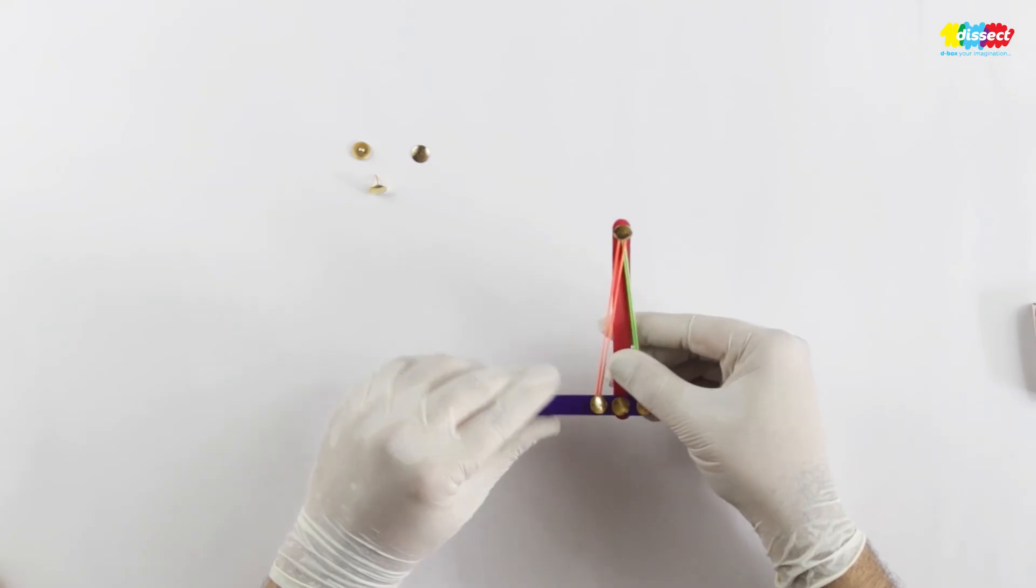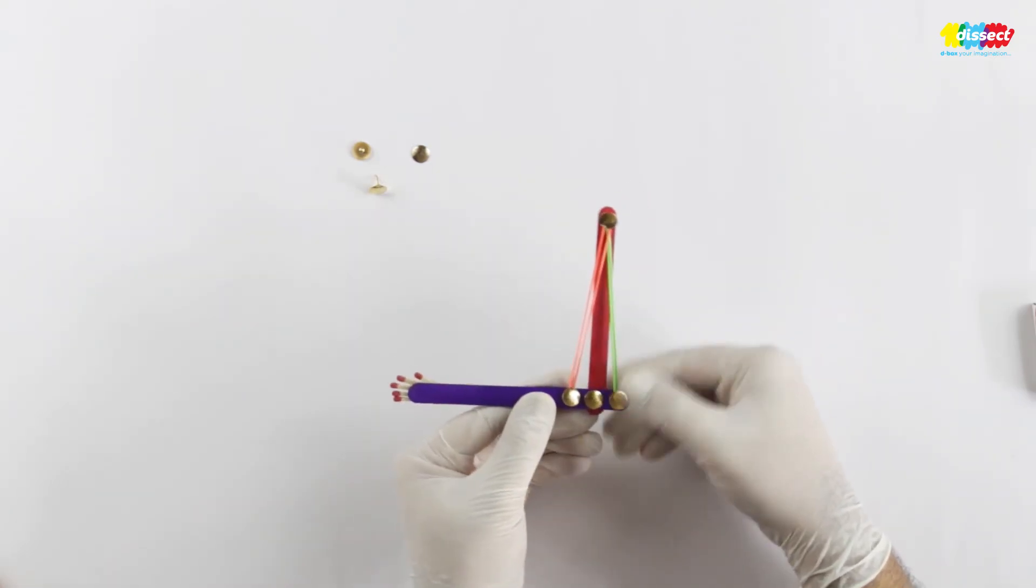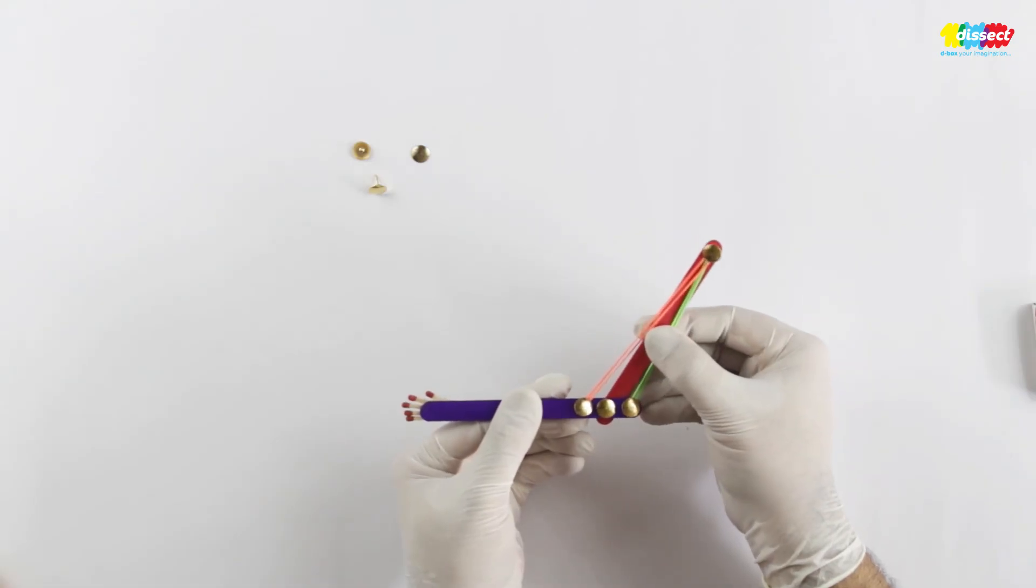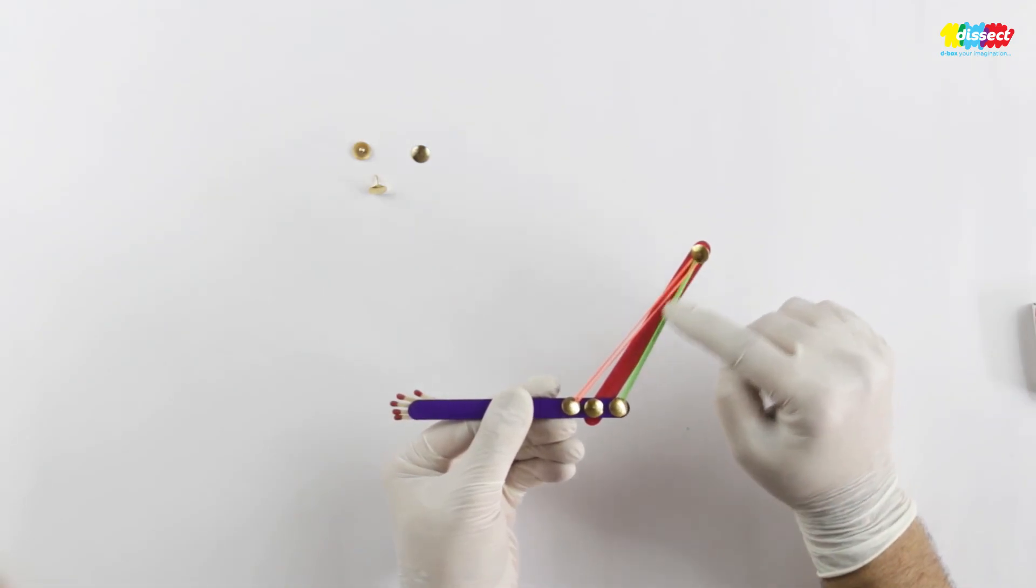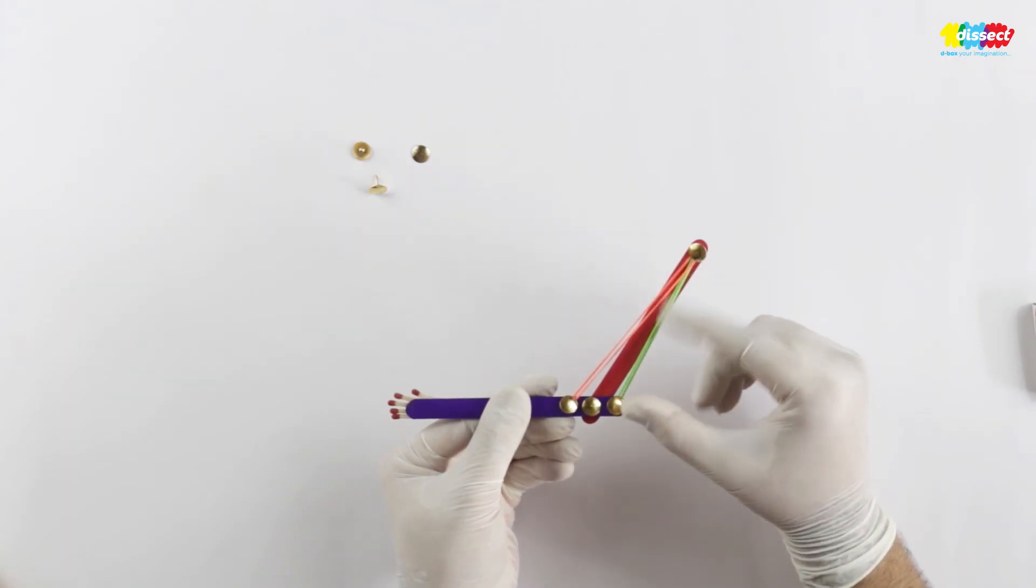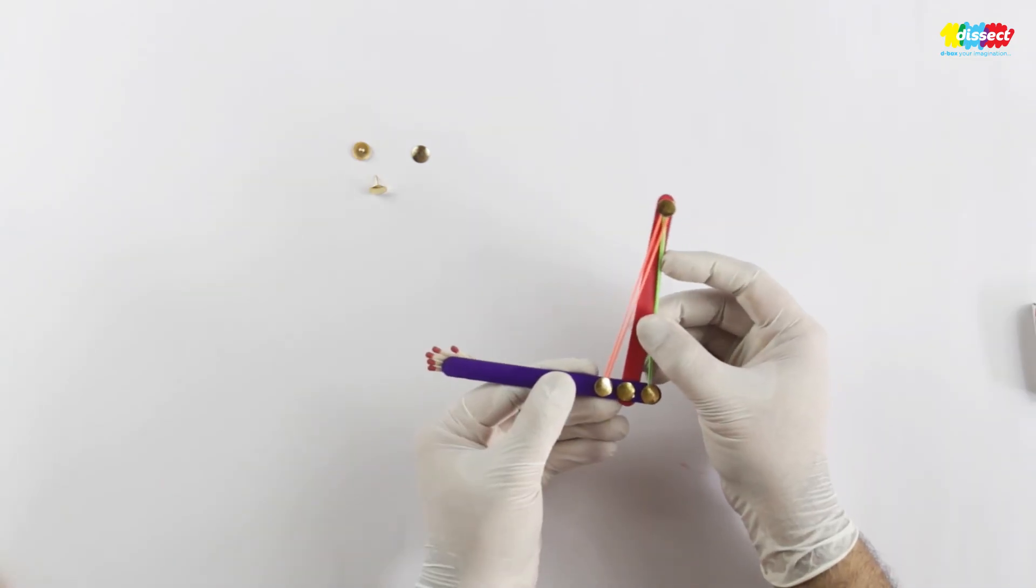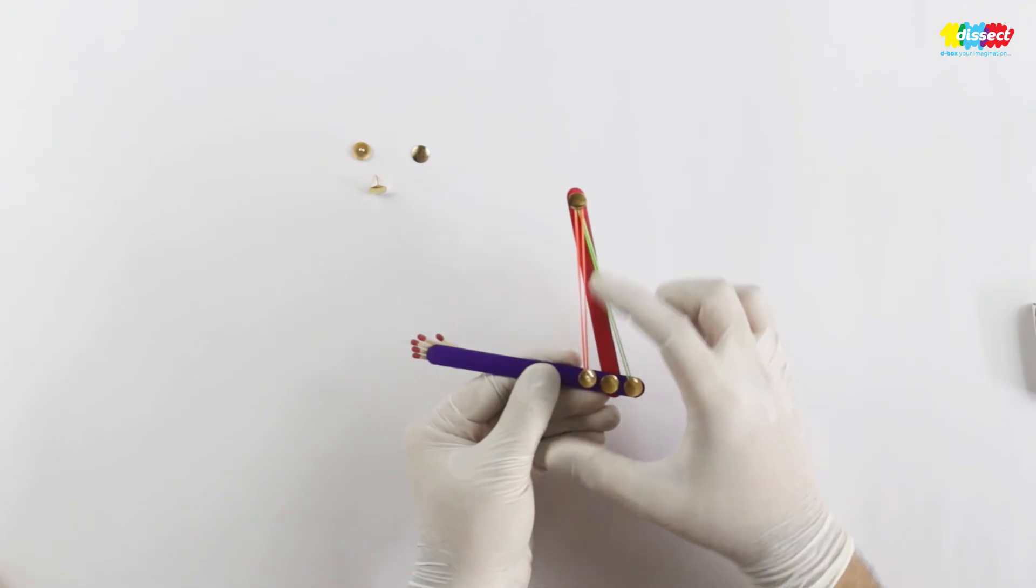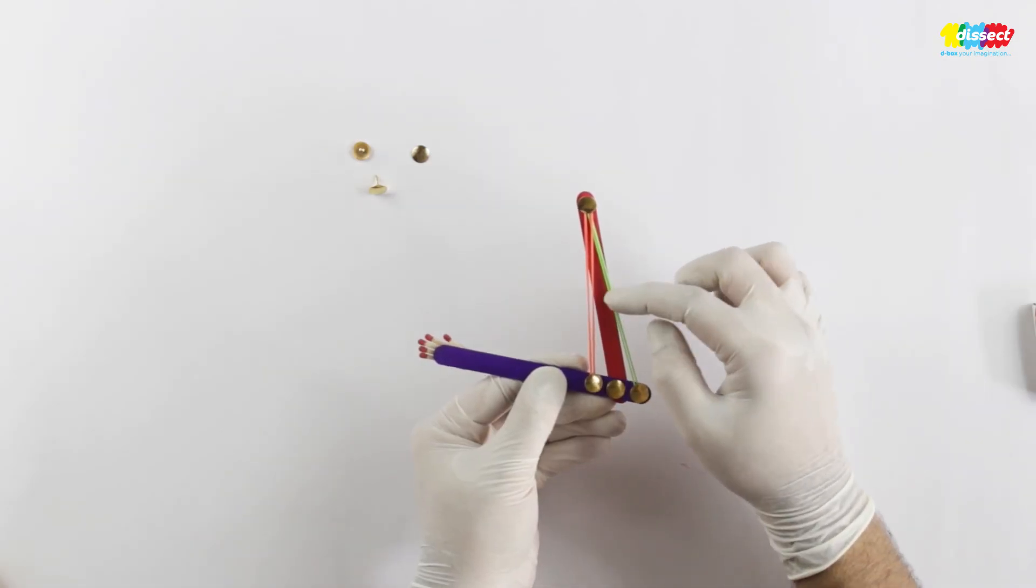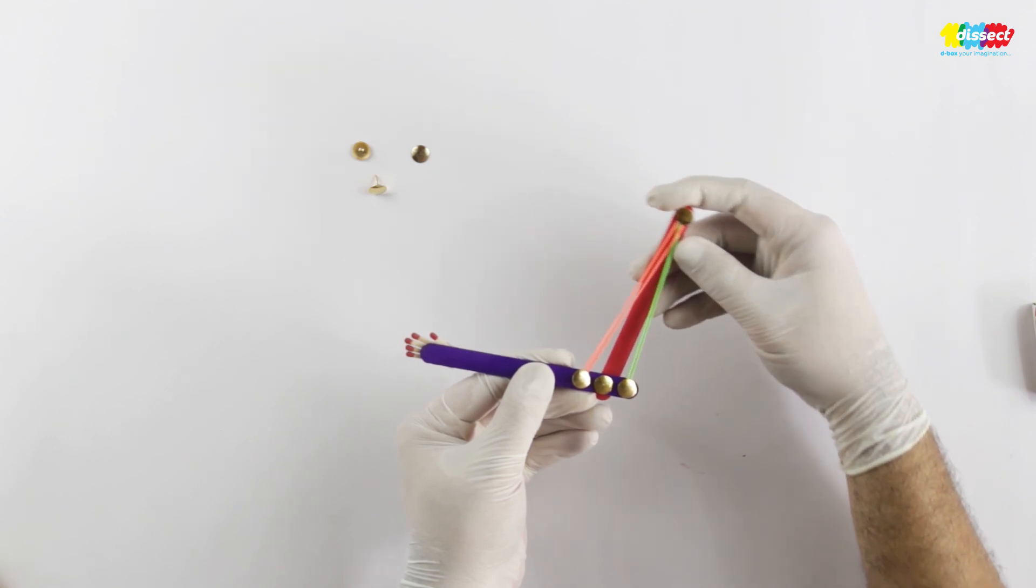So now we have a working model of a hand. You can see if I pull the arm this side, this muscle is contracting and this muscle is expanding. The reverse happens when we take it on the other side: this muscle is contracting and this muscle is expanding. So you can see how the arm works.